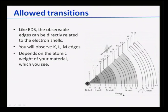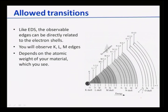This depends on what kind of transitions you allow. Like in EDX, observable edges are directly related to elemental shells — we can always see K, L, M edges — but in EELS we can even have intraband transitions, like within the M shell you have M1, M2, M3, M4, or within the N shell, M1, M2, M3, M4, M6, M7. So these transitions are also possible; these are actually spin-orbital transitions.